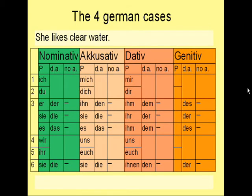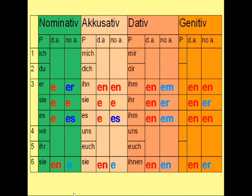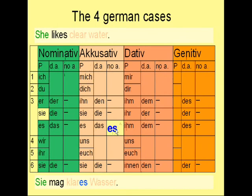Let's try: 'She likes clear water.' She is the subject in the nominative case. Clear water is in the accusative case, because after the verb 'like' always follows the accusative case in German. Clear means klar and water means Wasser, which is neuter. Looking at the table for neuter accusative with no article, the complete sentence reads: Sie mag klares Wasser.